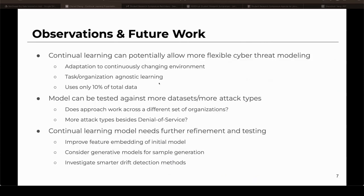Based on the research done, continual learning could potentially allow for more flexible cyber threat modeling: adaptation to a constantly changing environment, which is more reflective of the real world, and also task- or organization-agnostic learning, so regardless of which organization an attack originates from, the model should be able to detect it. Finally, it only uses about 10% of the total data, and all of this combined can help cybersecurity analysts correctly respond to attacks and mitigate the risks that come with these cyber threats.